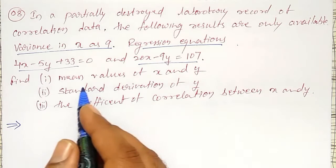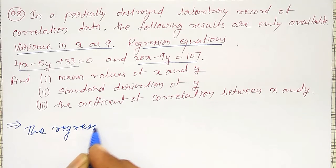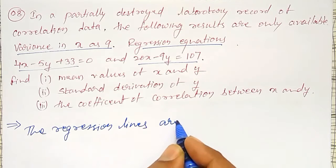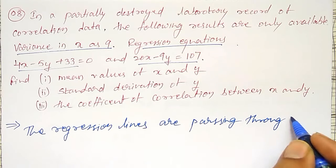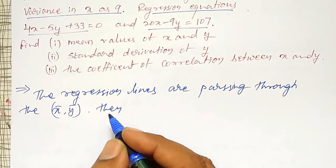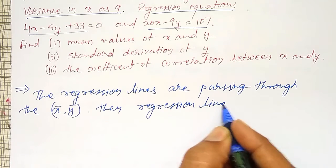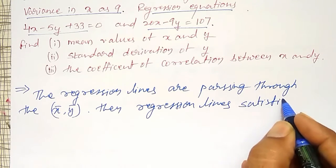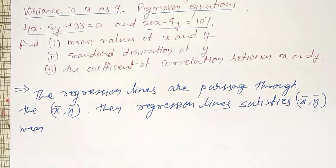standard deviation of y, and the coefficient of correlation between x and y I have to calculate. First of all, I have to find out the mean value of x and y. To find out that, what I will do - the regression lines are passing through the (x̄, ȳ). Then the regression lines satisfies those x̄, ȳ. Means, if I replace x by x̄ and y by ȳ, then also the equation holds good.